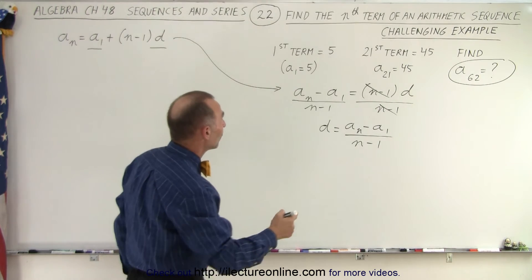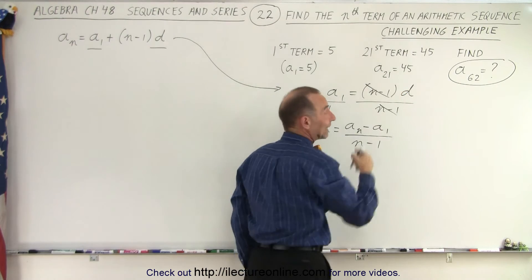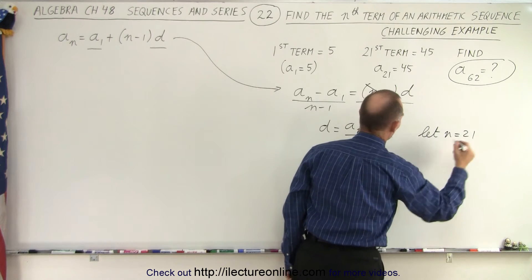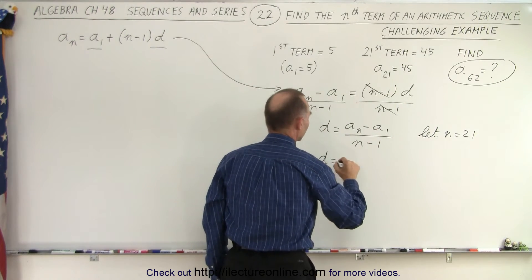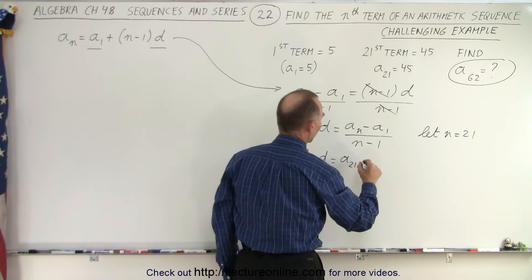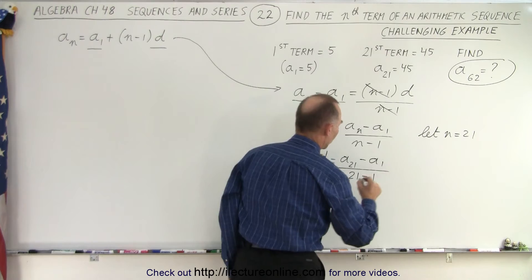So now, since we have the information on the 21st term, we can let N equal 21. So we're going to let N equal 21. And so D, the common difference, is equal to A sub N, and in this case, is going to be A sub 21 minus A sub 1 divided by 21 minus 1.